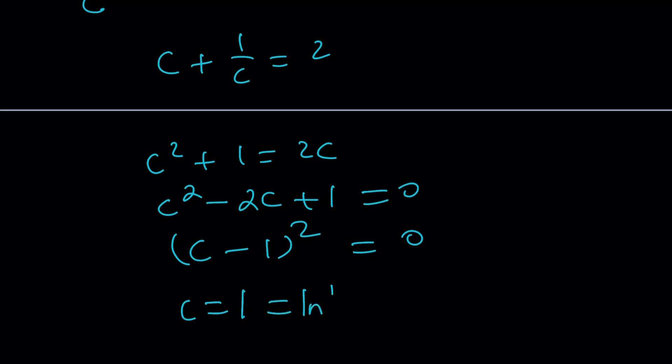But what is c? c is ln b, and by definition, since this is e, from here we get b equals e. It's a constant, Euler's number, which is about 2.7, and that's what we're getting from here. Make sense? That's b.